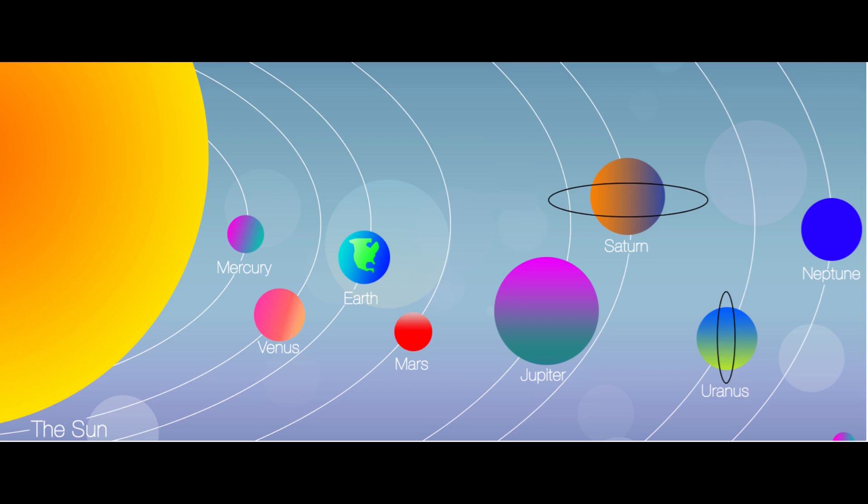Uranus spins on its side like rolling a ball on the ground. It's very cold and it's made of gas, just like Jupiter.